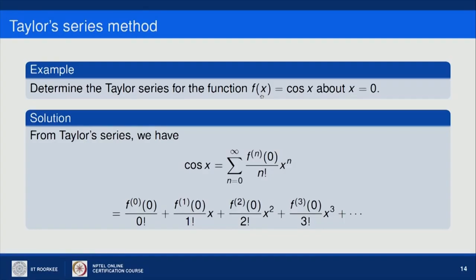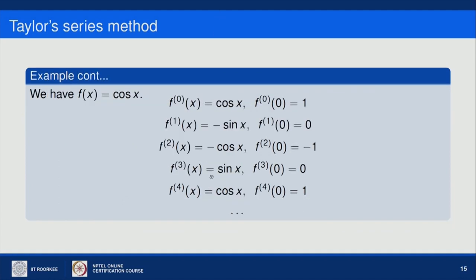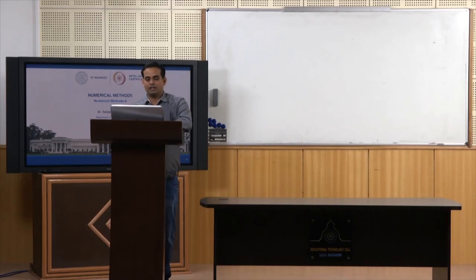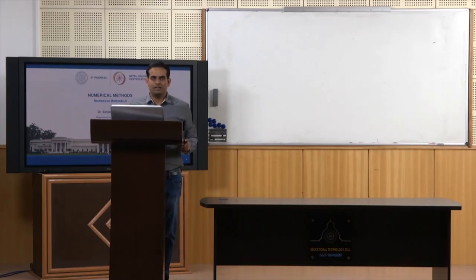We can also use Taylor series to find the approximation of a function about a given point. For example, to find cos(x) about x = 0: computing successive derivatives at x = 0 gives values 1, 0, −1, 0, 1, ... Substituting into the Taylor series expression gives: cos(x) ≈ 1 − x²/2! + x⁴/4! − ... We can use higher order Taylor methods for getting better accuracies.